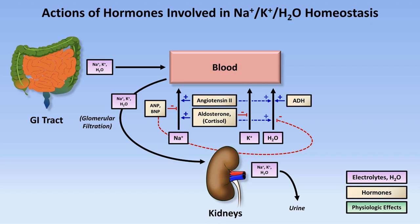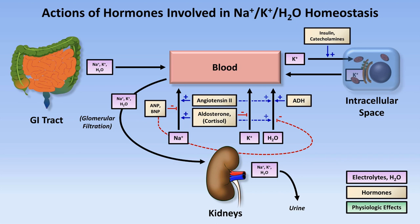In addition to hormone action in the kidneys, some other hormones can specifically impact potassium shifts between the blood and intracellular space. Specifically, insulin and catecholamines like epinephrine drive potassium from the extracellular space like blood to the intracellular space. The major end effects of the system are as follows.